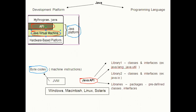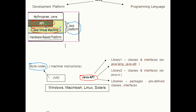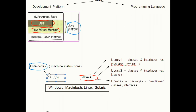JVM, or Java Virtual Machine, is the base of the Java Platform and it is ported into various hardware-based platforms. Normally JVM sits on top of other operating system platforms. JVM receives your Java program instructions that have been compiled into machine-independent bytecodes.